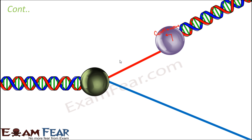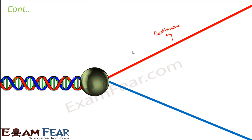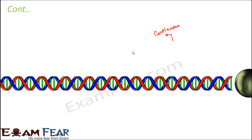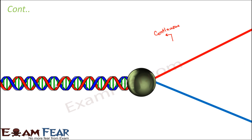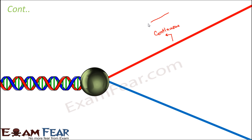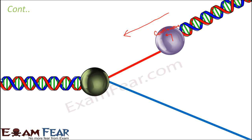In this animation you can see that the growth of the replication fork is also in this same direction. As helicase moves in this direction, the replication fork grows in this direction. Similarly, when DNA polymerase comes into picture, the DNA synthesis is also taking place in the same direction. That is why it is called continuous synthesis — the new strand is being created continuously.